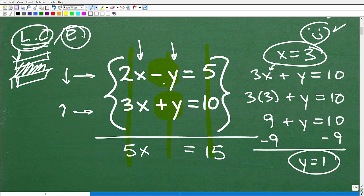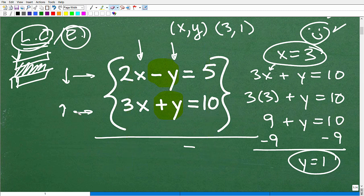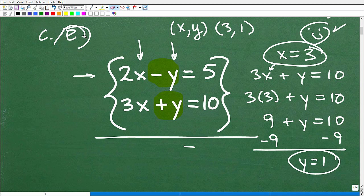Okay. So the solution to this system, remember, you're going to always organize it as an xy point. So x, then y. So my x was 3 and my y was 1. So that is the solution to this system, 3, 1. All right. Now, let's say, wow, are you sure that's it? Well, let's go ahead and just check here real quick. Let's just make sure.